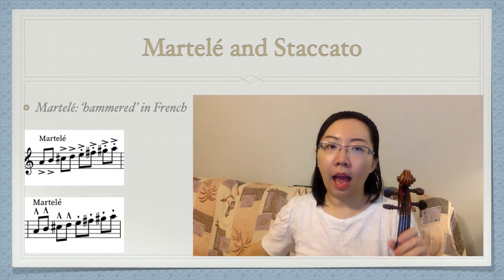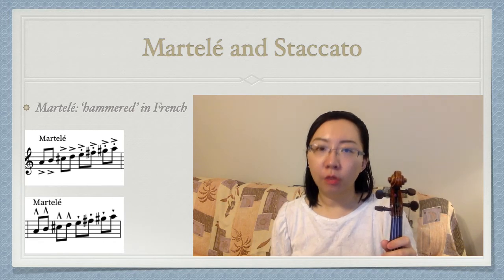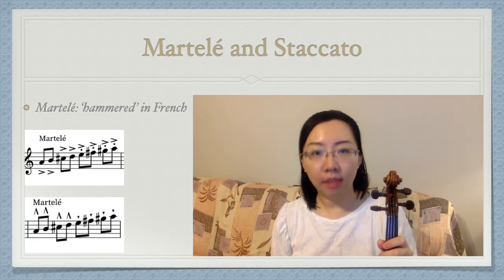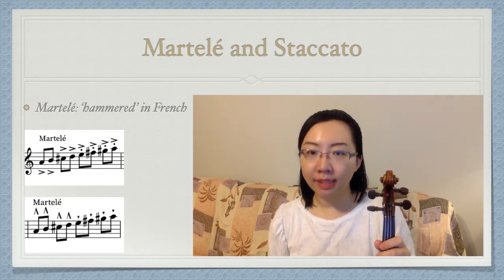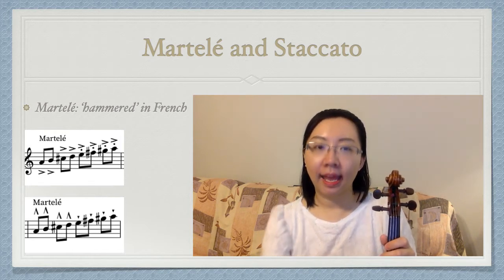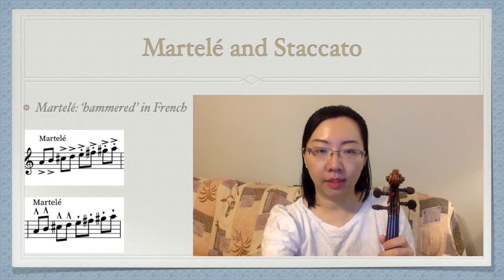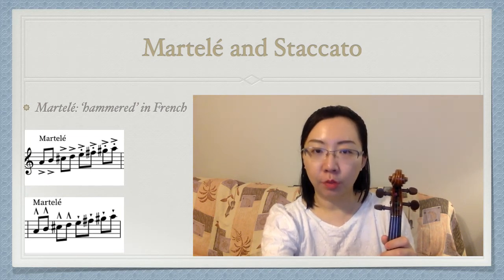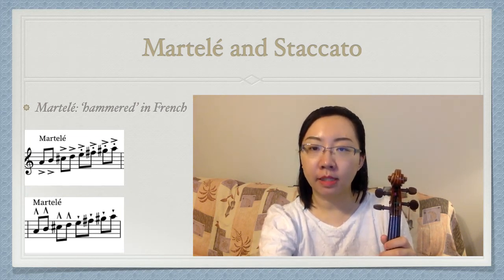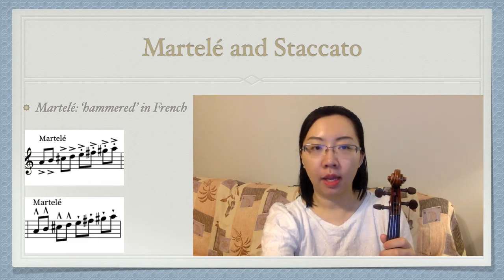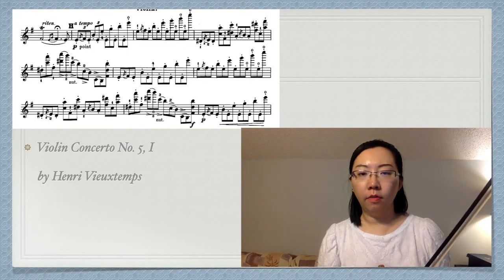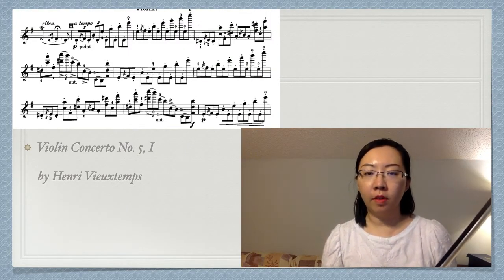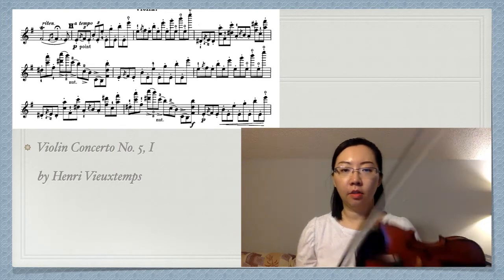Lastly, I play martelé with string crossing. Rovelli No. 1 Caprice is a good exercise. Practice without the trill first and then add the trills. I suggest you play with the metronome from slow to fast tempo, from 70 to 120. Here is an example from the first movement of Viotti's No. 5 Violin Concerto.